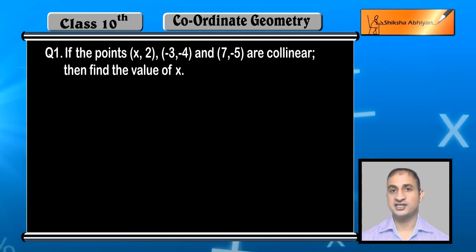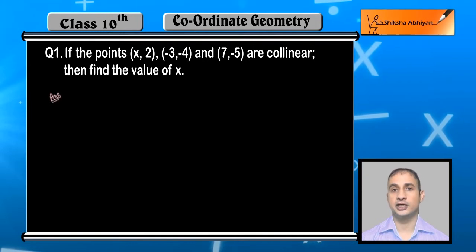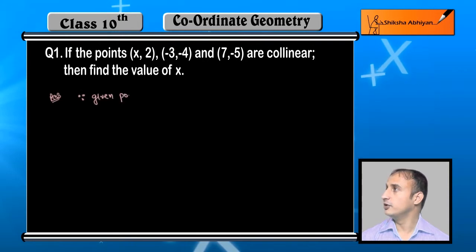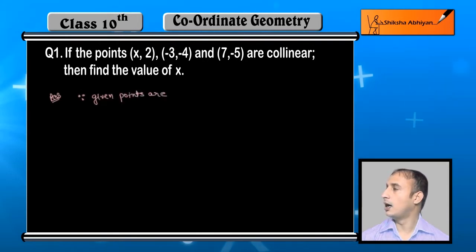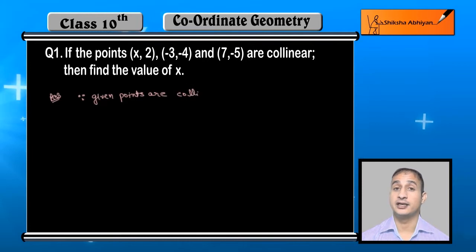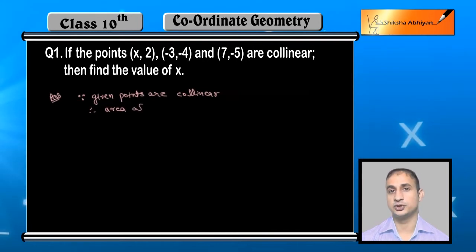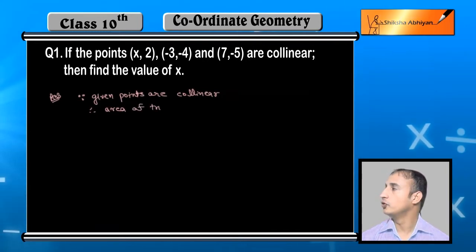हमें x की value निकालनी है। Since these three points are collinear, उनसे बनने वाले triangle का area क्या होगा? 0 होगा। तो मैं उसी की help से question को solve करूंगा। Therefore, area of the triangle made by them is equal to 0.